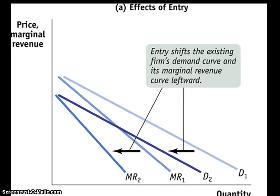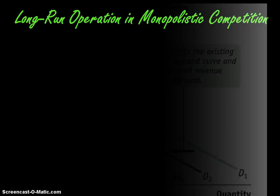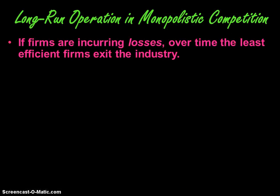This is what's going to happen to the demand and marginal revenue curves as additional firms enter the industry. On the other hand, if firms are incurring losses over time, the least efficient firms are going to exit the industry. They're going to wait until they can get out of their fixed-cost commitments, and then they're going to exit and stop producing.